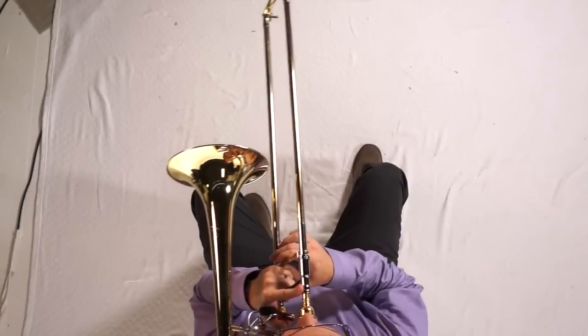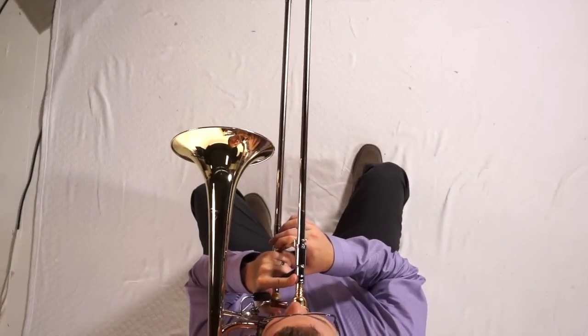You can do this same exercise starting on middle Bb and low Bb. Let's do middle Bb. Always glistening out one position further each time. One, two, three.